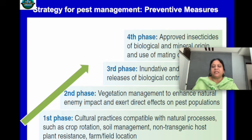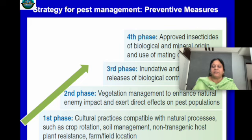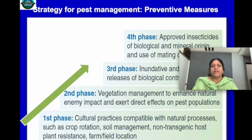The third phase is the inundative and inoculative release of biological control agents. When required, inundative release means releasing a huge quantity, while inoculative release means releasing small quantities early in the season before the pest develops. The fourth phase involves approved insecticides of biological and mineral origin, or mating disruptions and other mechanical methods to control pests.